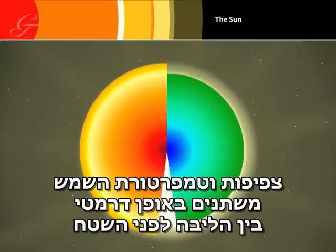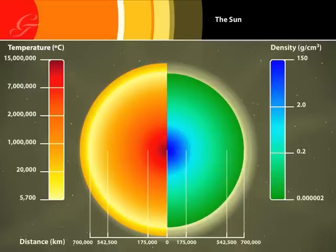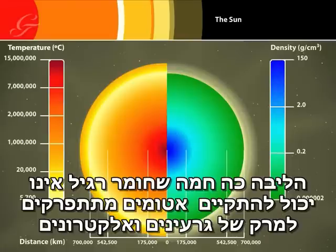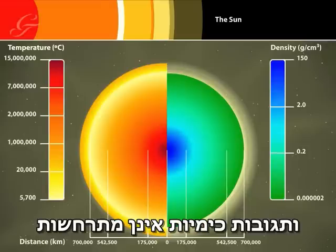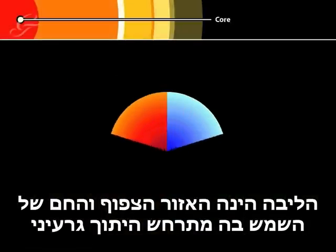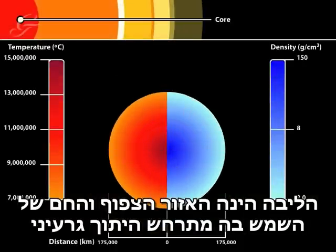The density and temperature of the Sun varies dramatically from the core to the surface. At its centre, the Sun is so dense that an amount the size of a glass of water would weigh the same as an adult woman. It is so hot that normal matter cannot exist. Atoms are broken down into a soup of nuclei and electrons and chemical reactions cannot take place. The core is the hot, dense region of the Sun where nuclear fusion reactions take place.